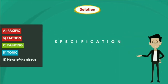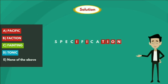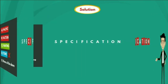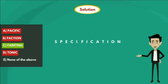Option D - TONIC. If we observe the given option, all the letters T-O-N-I-C are present in the given word SPECIFICATION. So option D is false. Therefore, only option C is true, and the answer is option C - FAINTING.